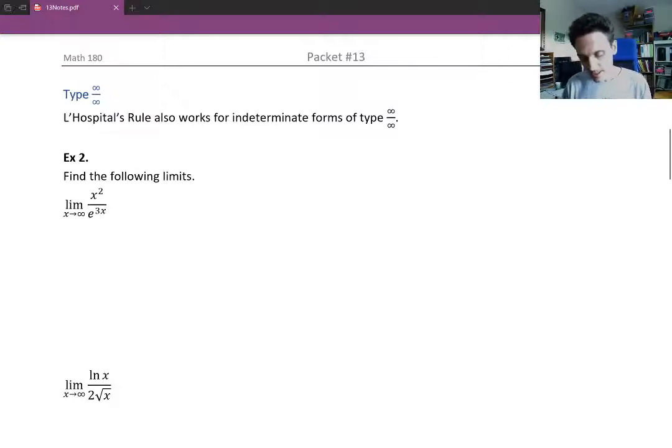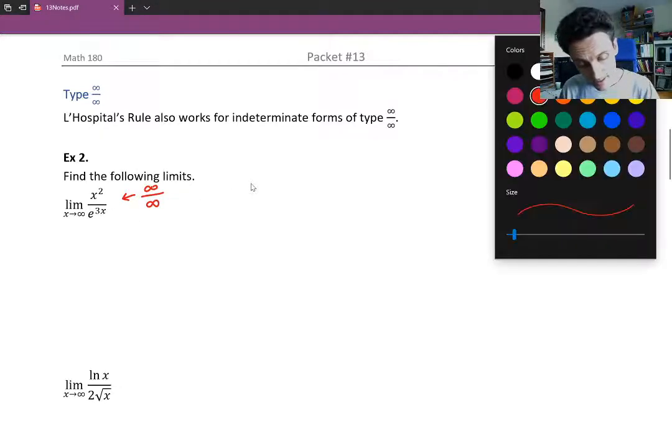In example two, we're given a limit as x approaches infinity of x squared over e to the 3x. Now if you'll notice both the top and the bottom are approaching infinity as x approaches infinity. When x gets larger and larger in the positive direction, x squared gets larger and larger in the positive direction. And e to the 3x also gets larger and larger. So this is an infinity over infinity type of limit.